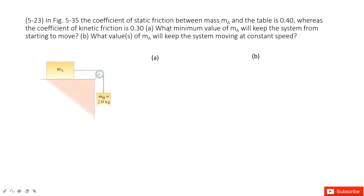The first part asks you to keep the system from starting to move. Starting to move — what does that mean? It means the object has a tendency to move but does not move, so it is still stationary. And the friction is static friction.